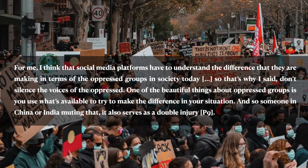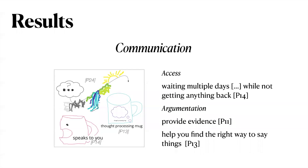Precisely because marginalized communities may lack other forms of power and access, the ability to make full use of social media becomes incredibly important. And representation by users can help platforms better address changing conditions. A second common theme that appeared in many designs was supporting users' communication with the platform. Participants talked about both whether users can communicate with the platform — which we refer to as access — and how users communicate with the platform, which we refer to as argumentation.